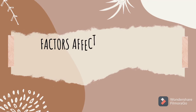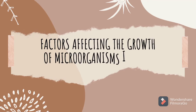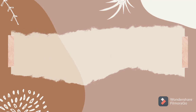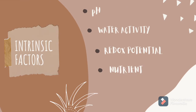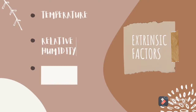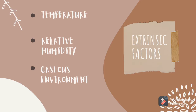Factors affecting the growth of microorganisms in food are divided into two categories. The first is intrinsic factors, which include pH, water activity, reduction potential, and nutrients. The second is extrinsic factors, which include temperature, relative humidity, and the gases environment.